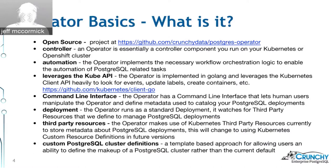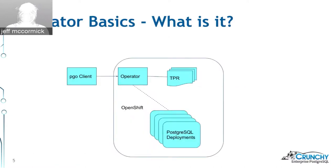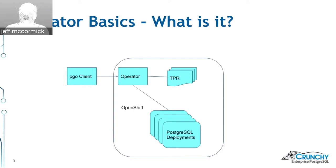This diagram shows the schematic of what the operator consists of. Outside OpenShift you have the PGO client — a command-line binary that connects through the Kubernetes API over to your OpenShift or Kubernetes cluster, exactly the same way kubectl or the OC command works. The operator runs inside OpenShift as a deployment and has a close relationship with the third-party resources defined specifically for this Postgres environment, listening and watching for events on those.